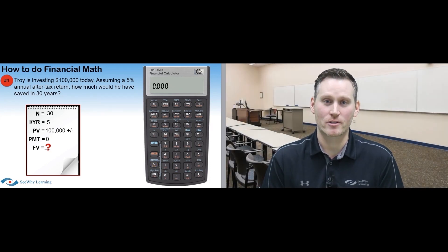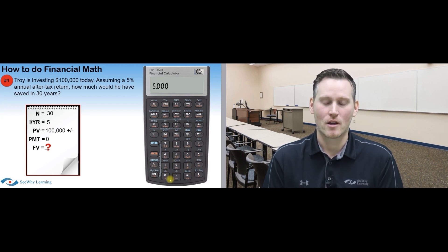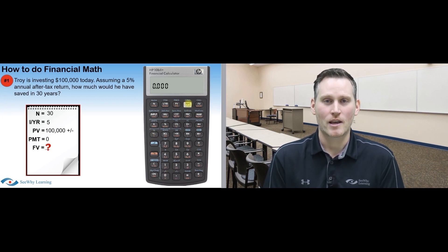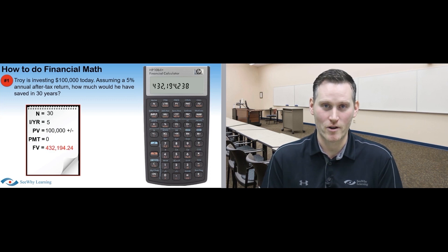Now that we've written down the variables, let's enter them into your calculator. Enter 30N, 5IYR, 100,000, the plus-minus key, then PV, 0 payment, and finally FV, because that's what we're trying to calculate. Now your calculator should say $432,194.24.